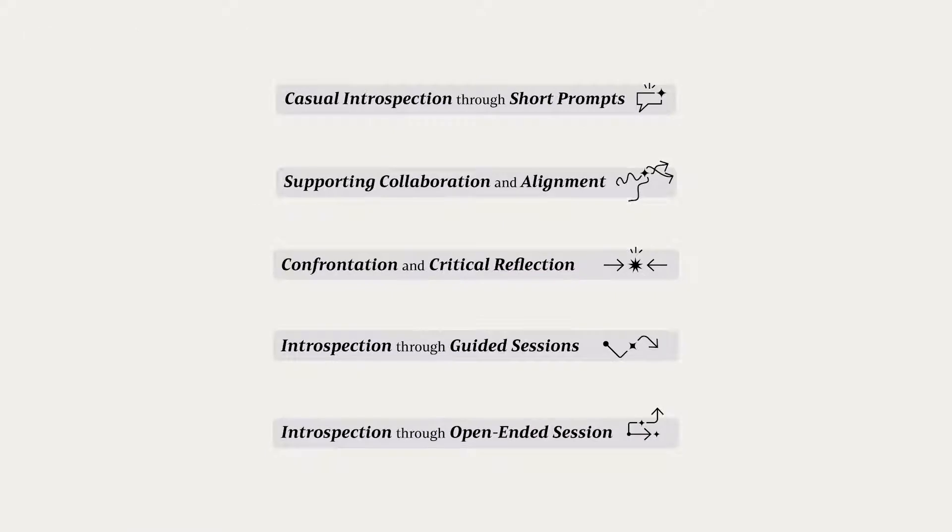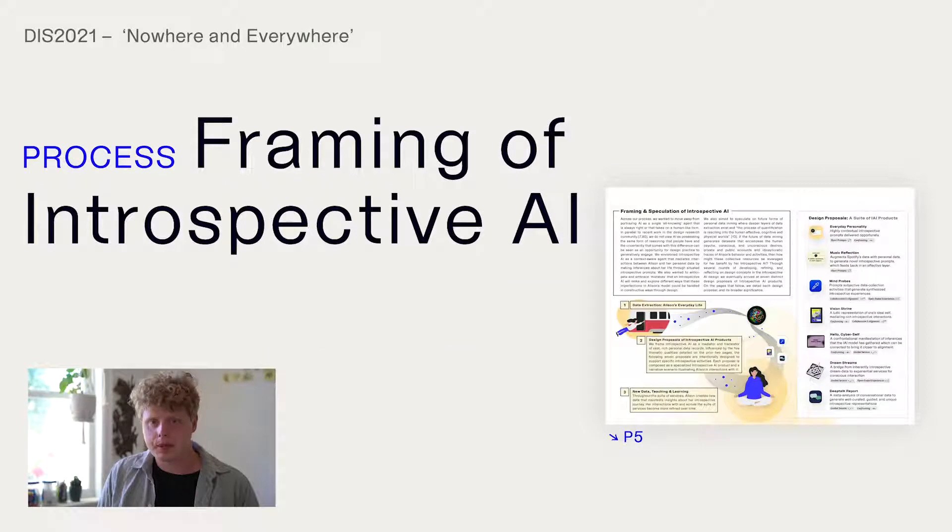These themes draw from introspective theory and inspired the design proposals presented in the pictorial. Across our process, we wanted to move away from portraying AI as a single all-knowing agent that is always right and that takes on a human-like form. In parallel to recent works in the design research community, we do not view AI as possessing the same form of reasoning that people have. The uncertainty that comes with this difference can be seen as an opportunity for design practice to generatively engage.